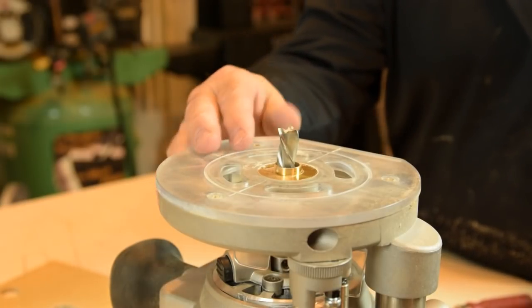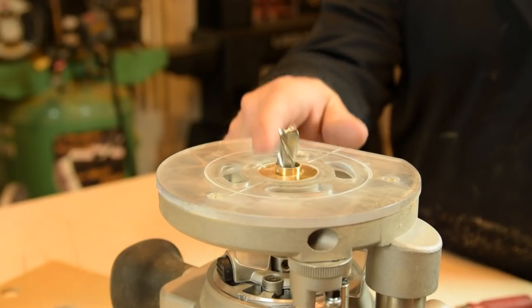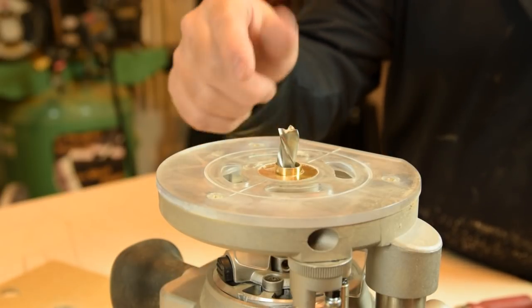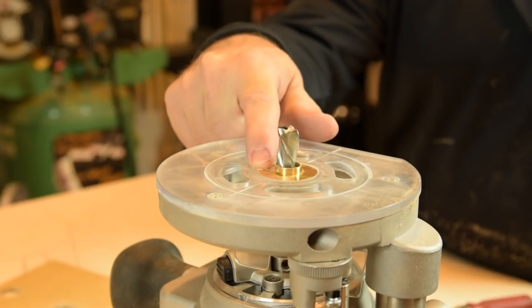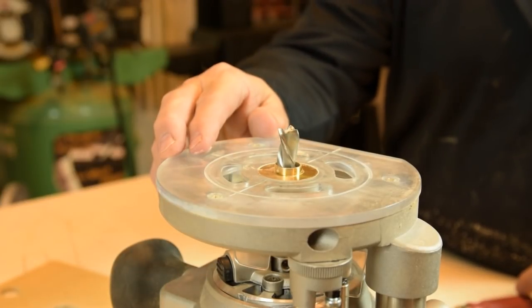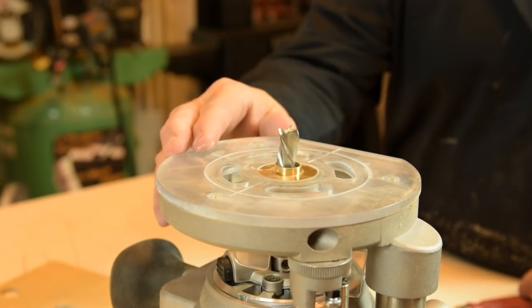So here's the router setup for our first pass cutting out the handle openings. This is just a half inch spiral bit with a guide bushing that rides around the inside of the template and that makes the first pass and we'll clean it up later with the bearing guided bit.